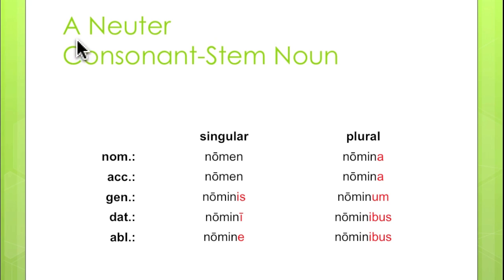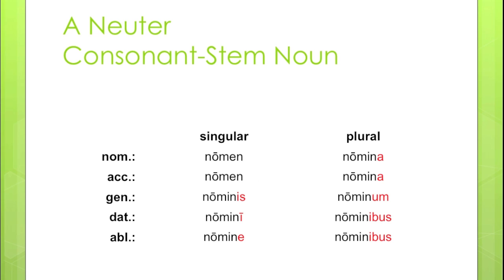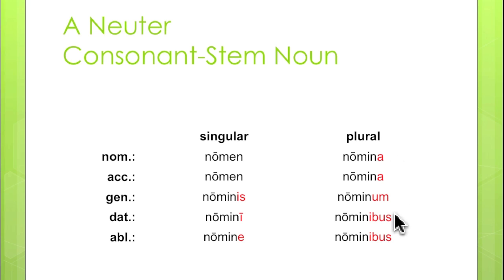Now let's look at a neuter consonant-stem noun. The noun we're going to look at is 'nomen, nominis,' neuter. Here's how it declines: nomen, nomen, nominis, nomini, nomine — nomina, nomina, nominum, nominibus, nominibus.